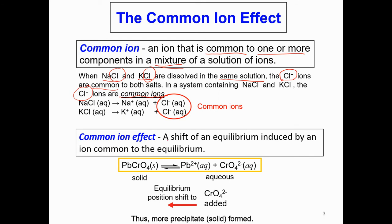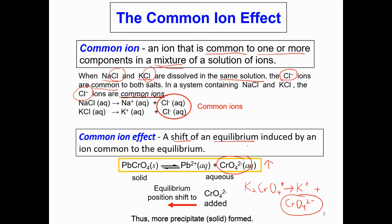Common ion effect is a shift in an equilibrium induced by an ion common to the equilibrium. For example, if I add potassium chromate, then potassium chromate will dissolve into potassium ion and chromate ion. Lead chromate will also dissolve and produce chromate ion as well. So potassium chromate will also have chromate ion, meaning the concentration of chromate ion has increased. So there will be a shift of equilibrium induced by an ion common to the equilibrium.